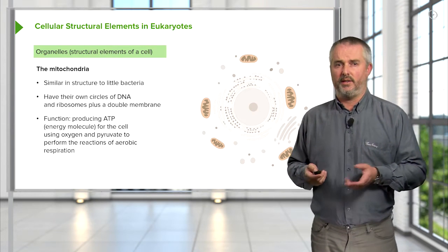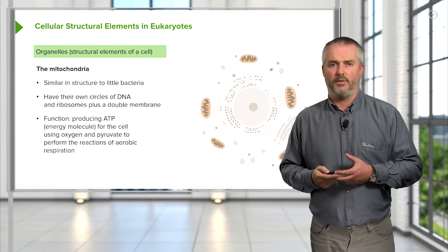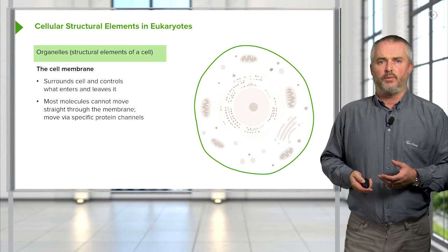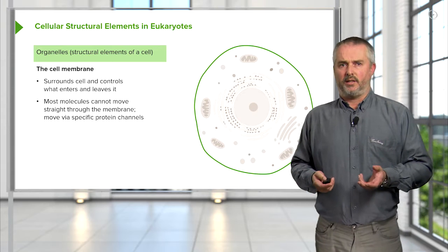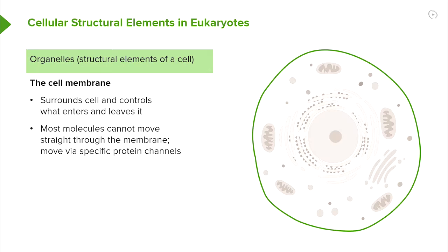The cell membrane surrounds and controls what enters and leaves the cell. Most molecules can't go straight through it, so they have to go through a specific channel, and the cell can determine which channels are there.